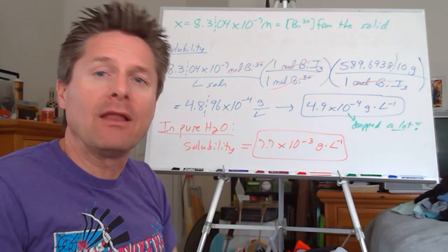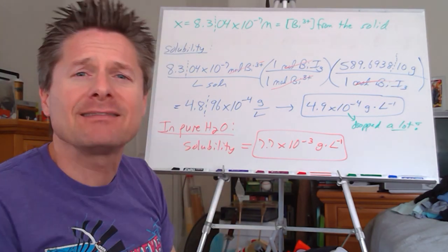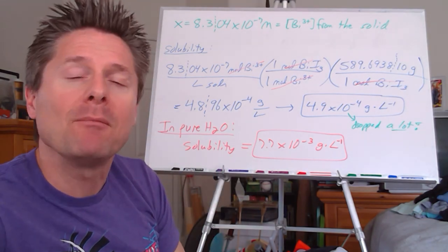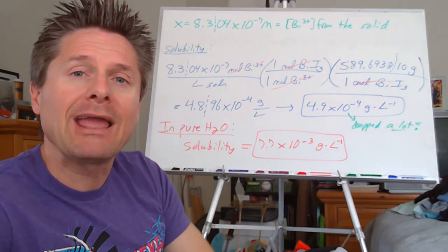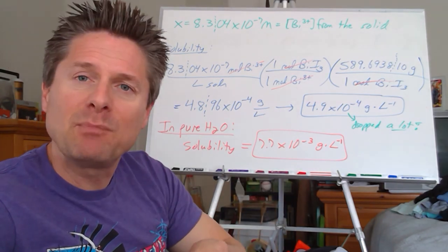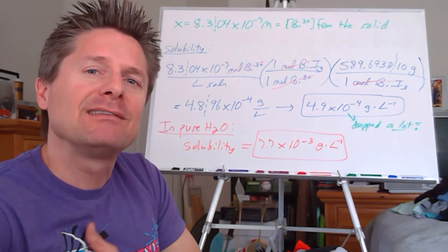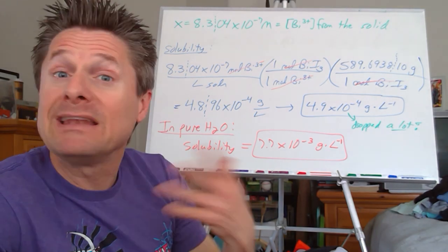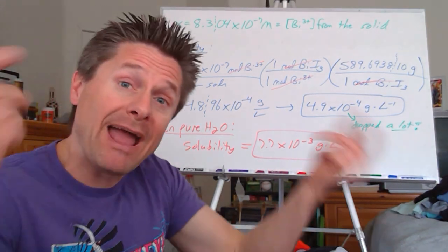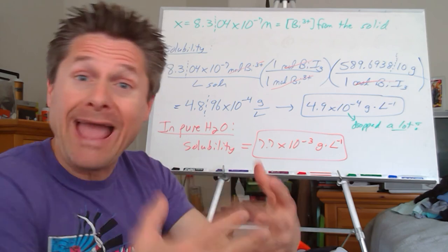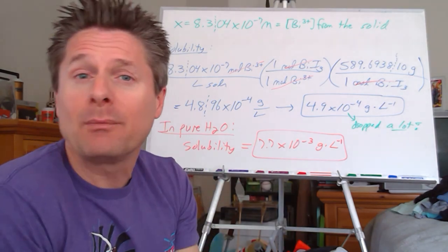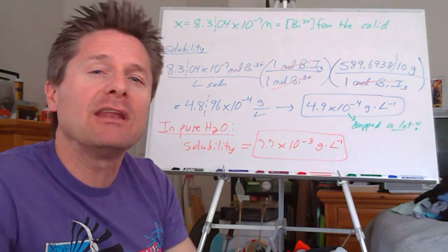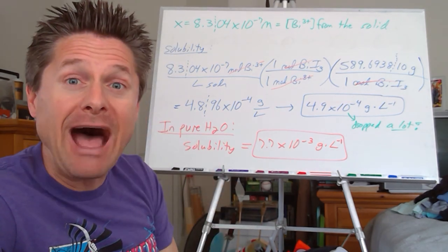Now we're going to look at acid-base behavior, complex ions dissolving solids, and the completeness of precipitation — if I add two solutions, can you predict whether a precipitate is going to happen? It turns out there's a minimum concentration of these species you need. Let's get into that good, juicy stuff.